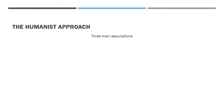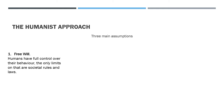The next approach is the humanist approach, which is very different from others. It is ideographic — meaning it looks at individuals rather than groups. The humanist approach does not want to be scientific; it believes everyone is unique and subjective. It has three main assumptions. The first is free will: humans have full control over their behaviour, not pre-decided by anything else, with the only limits being societal rules and laws. It also believes in holism — looking at an individual's entire life to understand their behaviour.